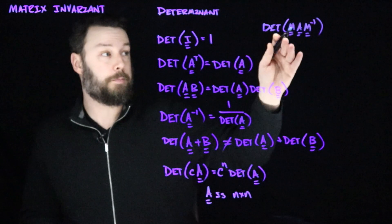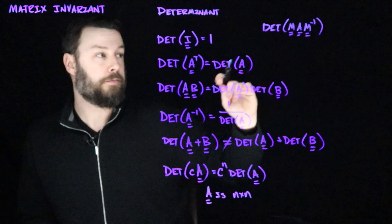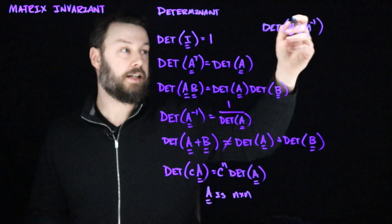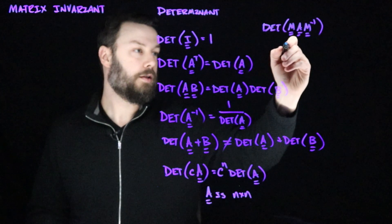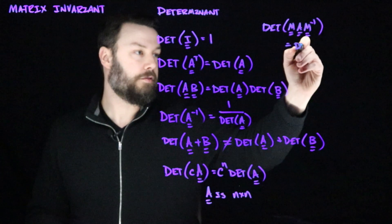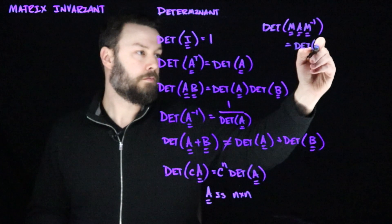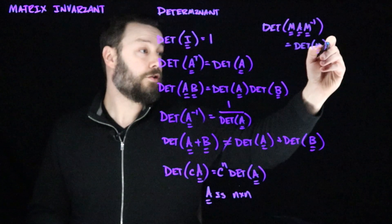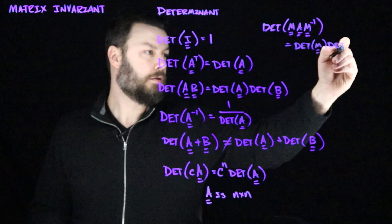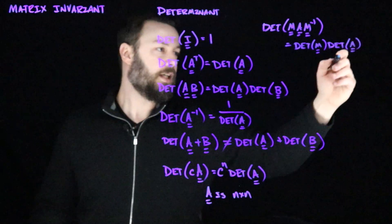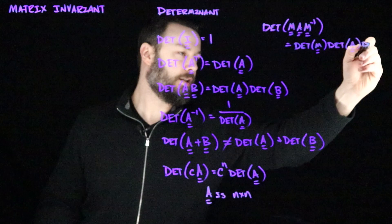Then what happens is, I can chop this up, I can get determinant of M, determinant of A, and of course determinant of M inverse.